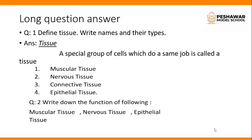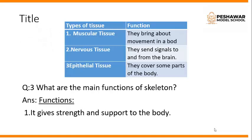Question number 2: write down the function of the following — muscular tissue, nervous tissue, and epithelial tissue. Muscular tissue: they bring about movement in the body. Nervous tissue: they send signals to and from the brain. Epithelial tissue: they cover some parts of the body.